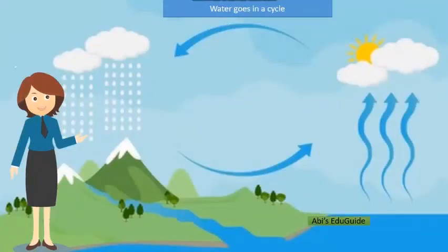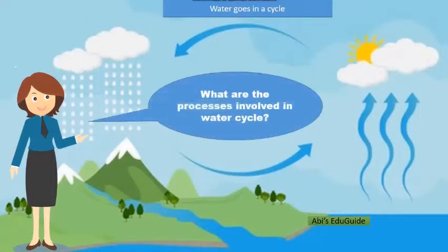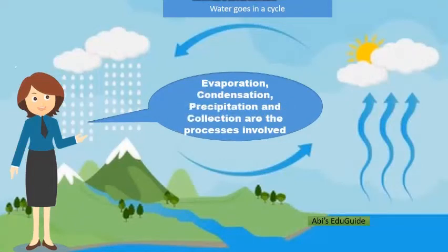Water goes in a cycle. What are the processes involved in the water cycle? Evaporation, condensation, precipitation, and collection are the processes involved in the water cycle.